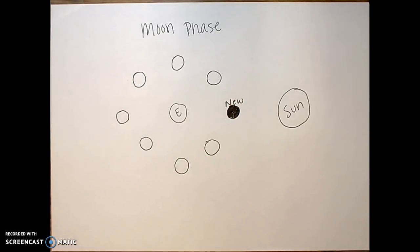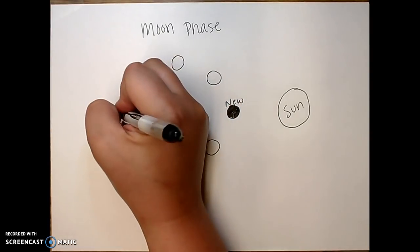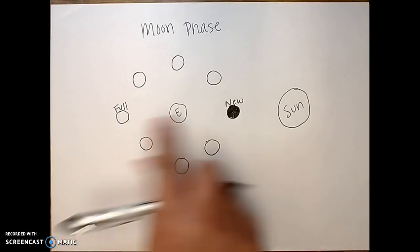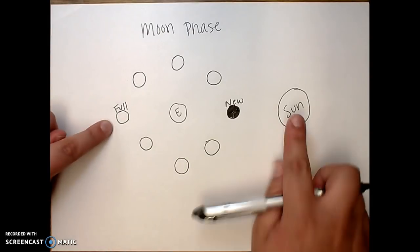The next phase I'm going to draw is my full moon, which I don't need to fill in. And I know it's just going to be opposite and furthest away from the sun.